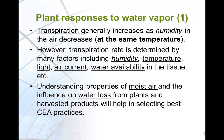Humidity can be expressed by many different parameters. Therefore, understanding the properties of moist air and their influence on water loss from plants and harvested produce will help in selecting the best controlled environment agriculture (CEA) practices.